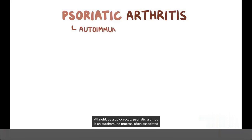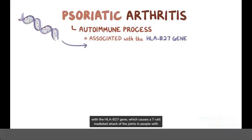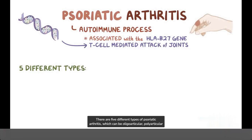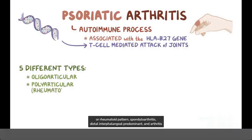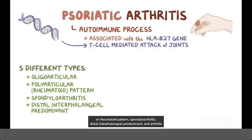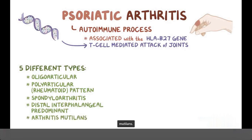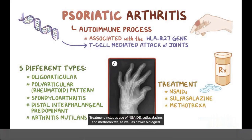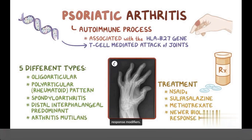As a quick recap, psoriatic arthritis is an autoimmune process, often associated with the HLA-B27 gene, which causes a T-cell mediated attack of the joints in people with psoriasis. There are five different types of psoriatic arthritis, which can be oligoarticular, polyarticular or rheumatoid pattern, spondyloarthritis, distal interphalangeal predominant, and arthritis mutilans. Treatment includes use of NSAIDs, sulfasalazine, and methotrexate, as well as newer biological response modifiers.